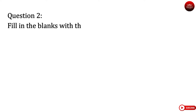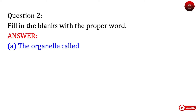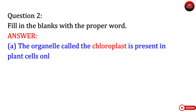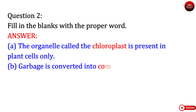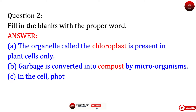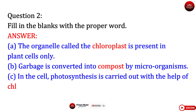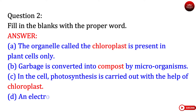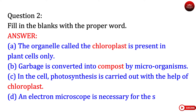Question 2: Fill in the blanks with the proper word. Answer. A. The organelle called the chloroplast is present in plant cells only. B. Garbage is converted into compost by microorganisms. C. In the cell, photosynthesis is carried out with the help of chloroplast. D. An electron microscope is necessary for the study of cells.